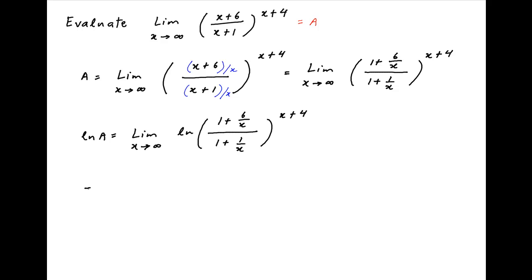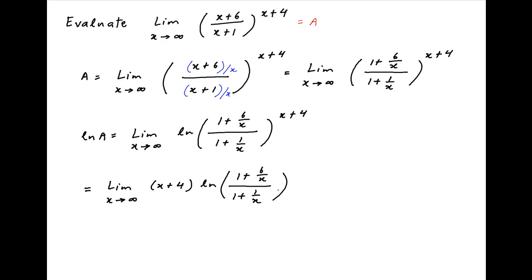Using properties of logarithms, this is equal to the limit as x tends to infinity of (x plus 4) times ln of (1 plus 6 upon x) divided by (1 plus 1 upon x). Again using properties of logarithms, this equals the limit as x tends to infinity of (x plus 4) times [ln(1 plus 6 upon x) minus ln(1 plus 1 upon x)].